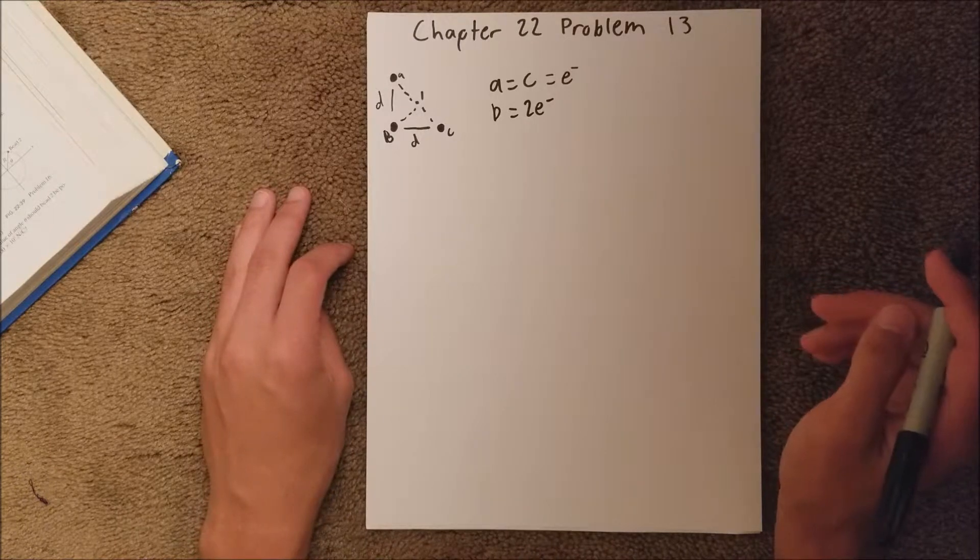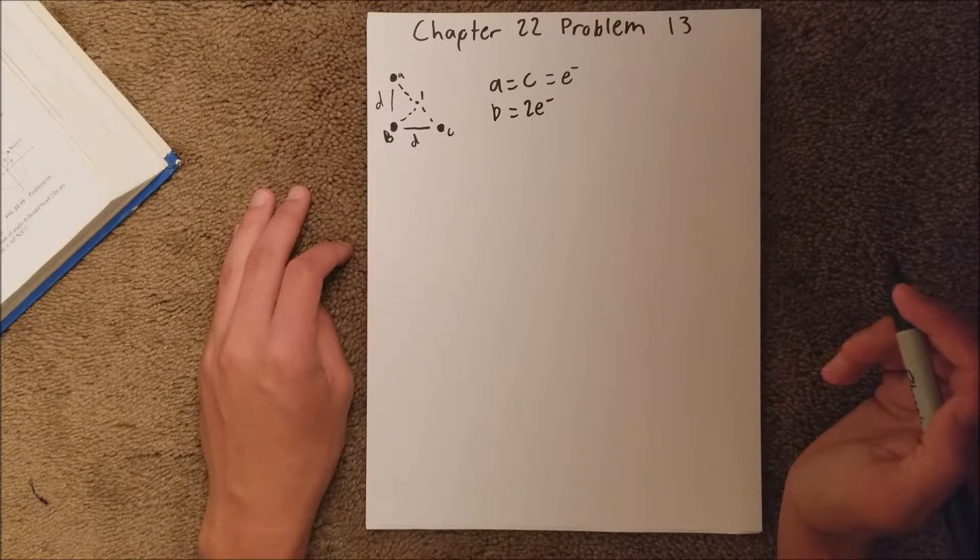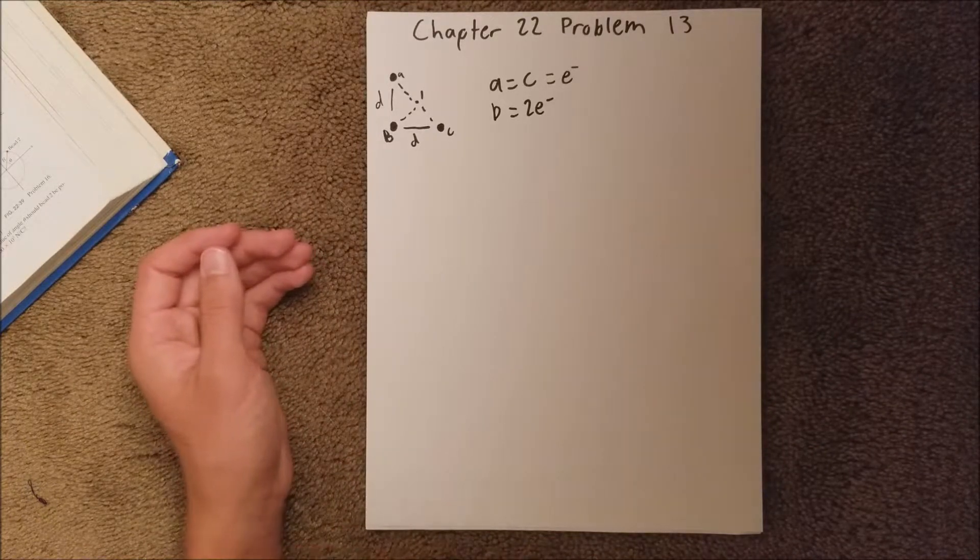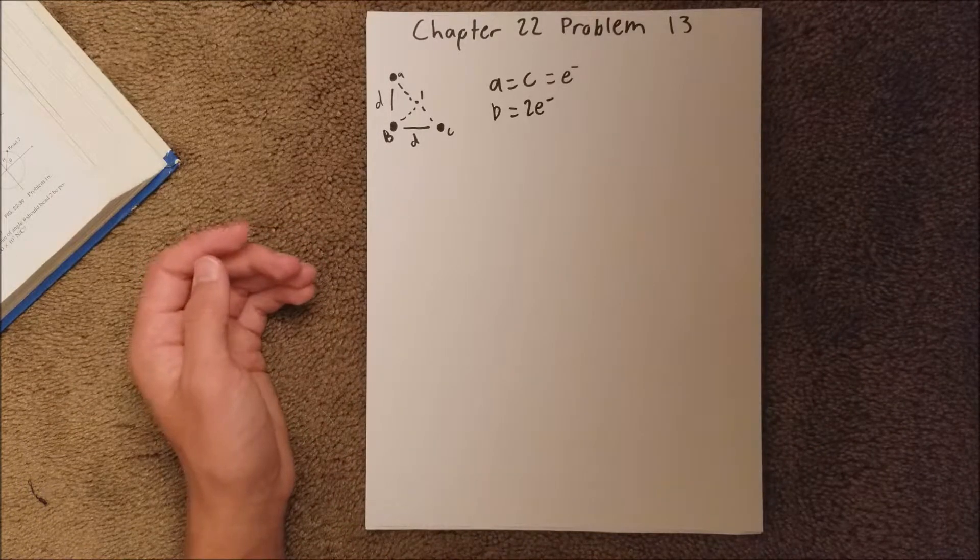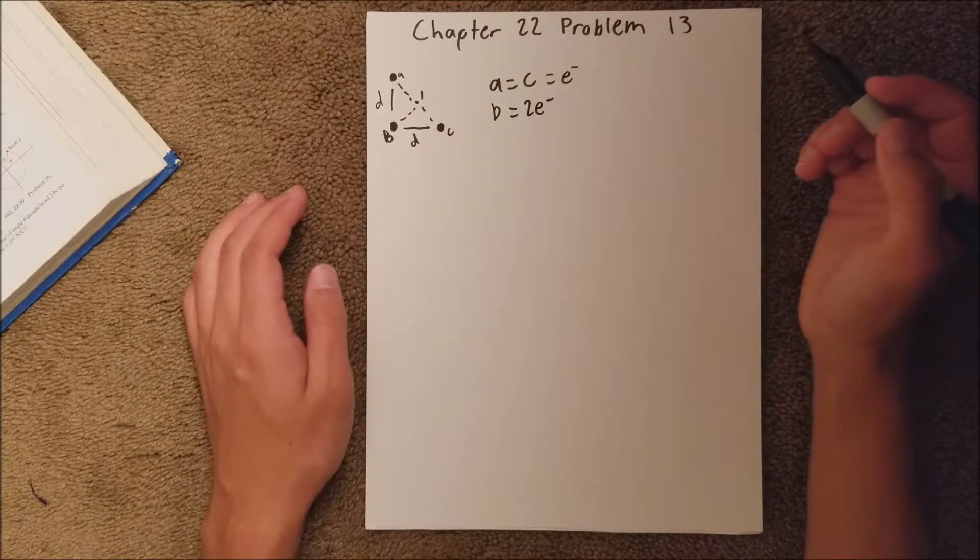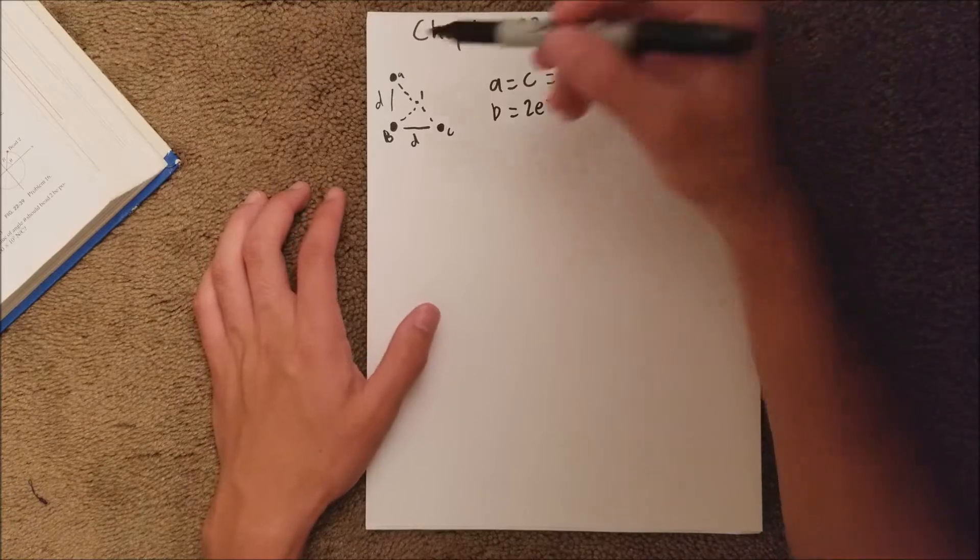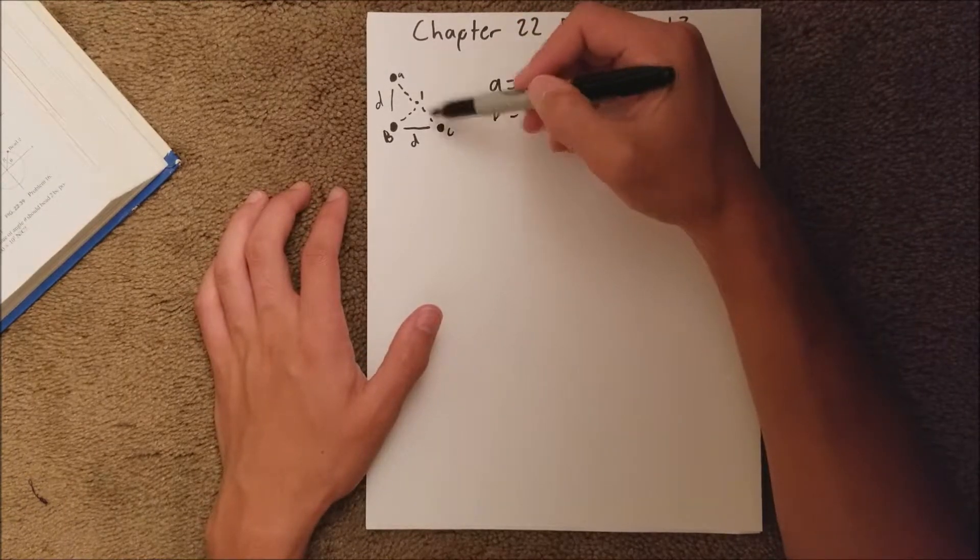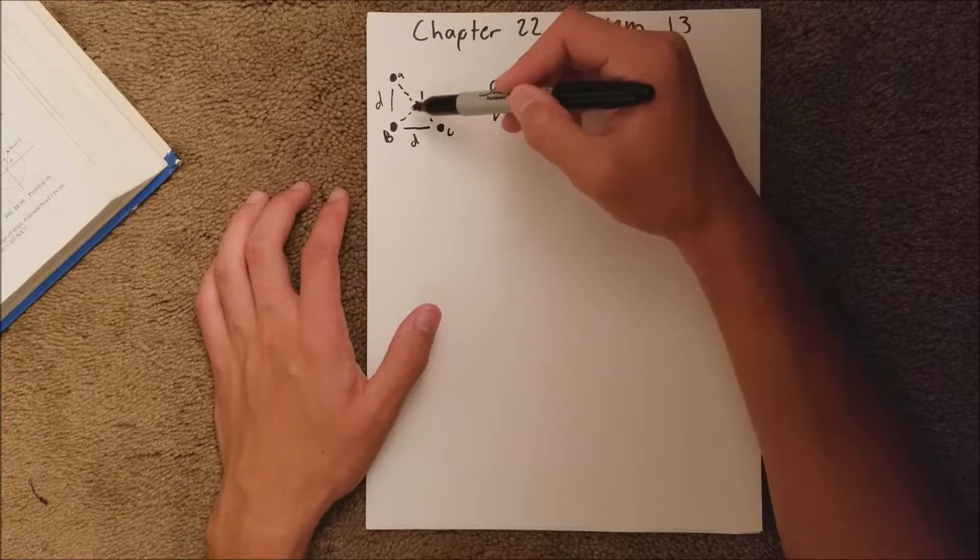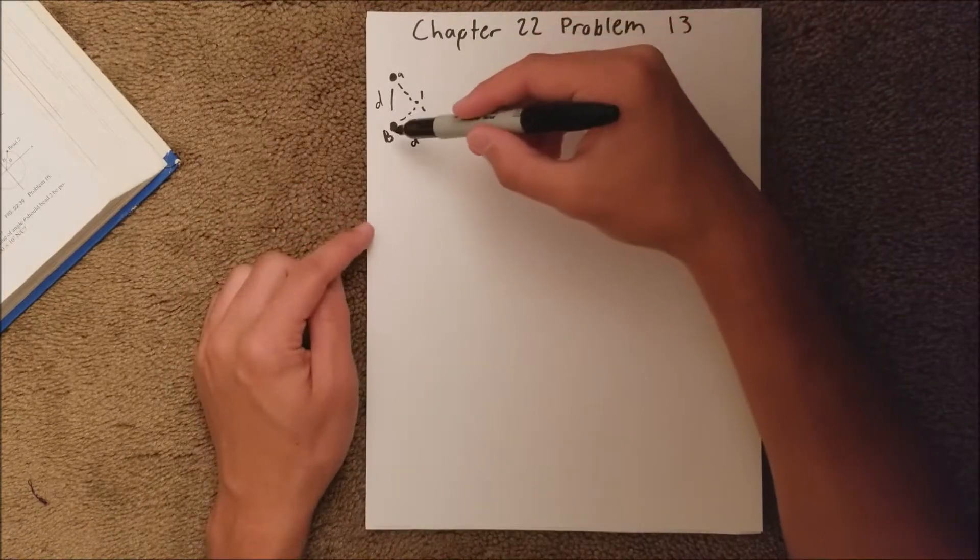So to find the electric field, we are asked to find the magnitude and direction of the electric field at point P due to these other particles. And since these both have the same charge and the same distance away from each other, they actually will not have any effect on the particle, so it's only going to be particle B.